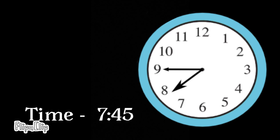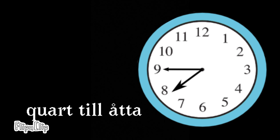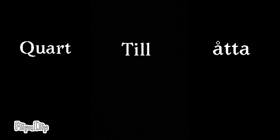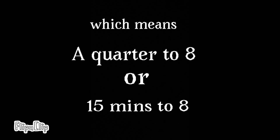For example, if the time is 7:45, you read the time as kvart till åtta. So when you divide this into three sections — kvart, till, and åtta — you might recognize åtta as 8, till as 'to', kvart as a quarter. So it means a quarter to 8, or 15 minutes to 8.